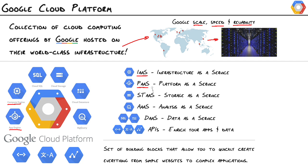Anytime you deploy your application to Google's Cloud via App Engine, it will spin up one or more virtual machines — think of them as specialized virtual machines that contain everything your application needs to run. It's a great platform for applications of all shapes and sizes, and quite the enabler for rapid application development.